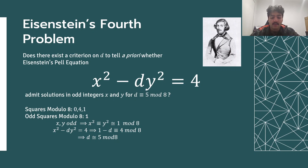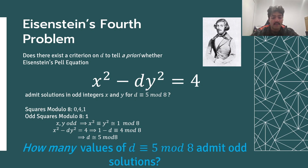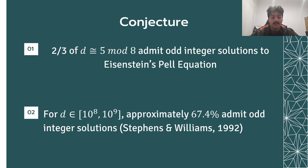As of yet, no such condition has been found. However, an interesting proposition has been proved about the equivalent conditions to the admission of odd integer solutions, and a conjecture on how many values of d congruent to 5 mod 8 admit odd solutions — specifically, two-thirds of them. Computational data from Stevens and Williams for d in the range 10 to the 8 to 10 to the 9 indicates that approximately 67.4% of d in the interval do admit odd solutions, supporting the conjecture.